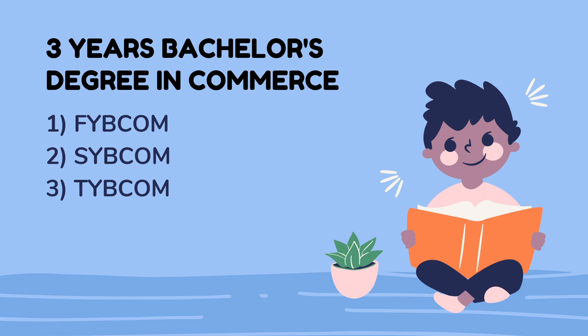Similarly, if you are a science student and complete 3 years, you get a BSc — Bachelor of Science. A student who completes arts gets a BA — Bachelor of Arts. After completing a bachelor's degree, if you spend 2 more years you will complete a master's degree — that will be MCom.